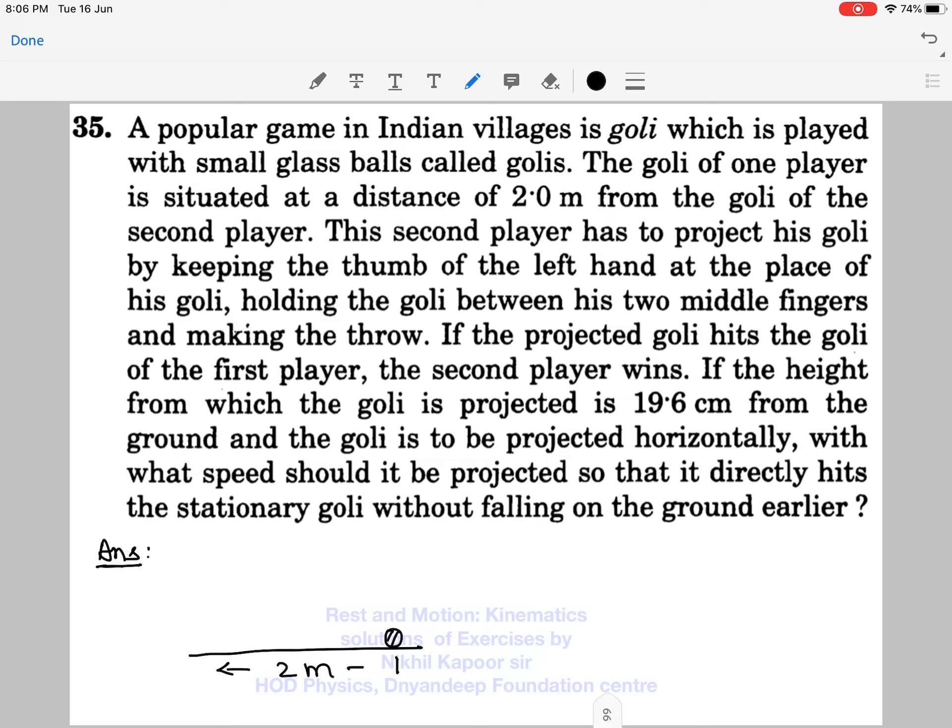This is the goalie of the first player, and after 2m and at a height of 19.6cm, that is 0.196m, the goalie of the other player is projected horizontally and we need to find with what speed it should be projected so that it directly hits it.